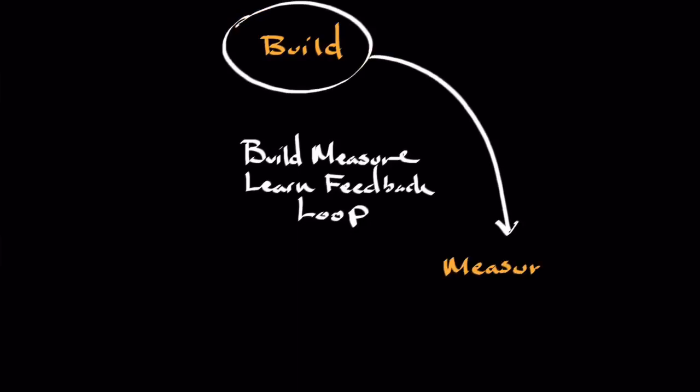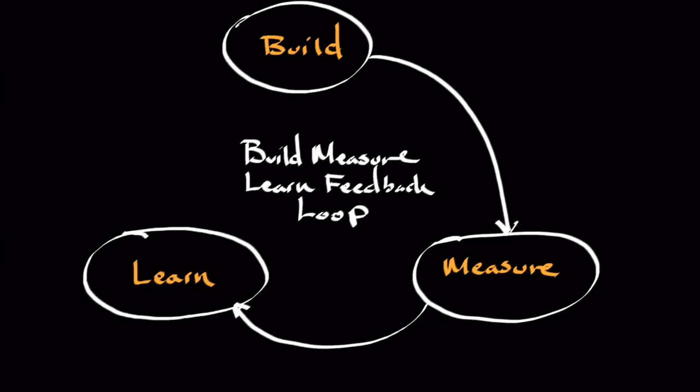The basic idea behind the build-measure-learn feedback loop is that engaging in feedback is an iterative process, meaning it's circular. There are three stages to this naturally: the first is build, the second is measure, and the third is learn. Notice that each of these is connected in a circular fashion, meaning we're constantly involved in this process of learning what consumers enjoy and what frustrates them.